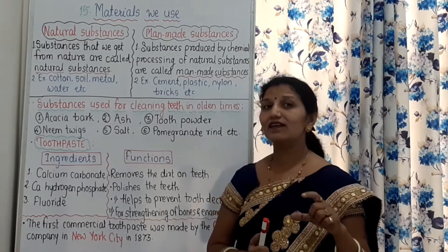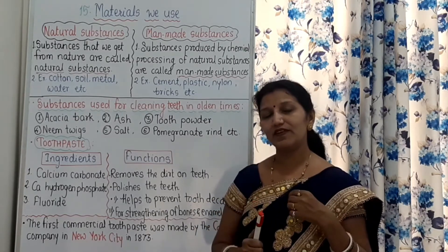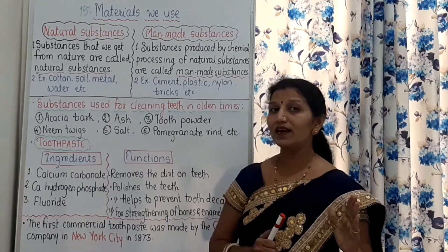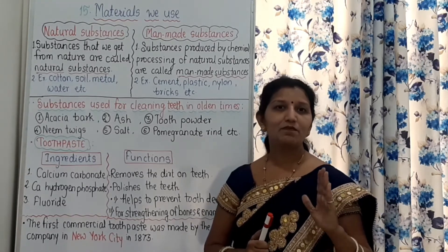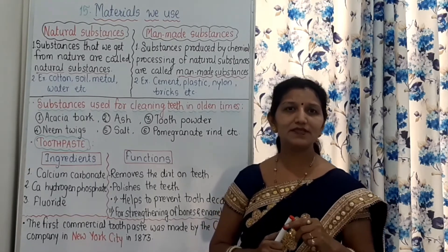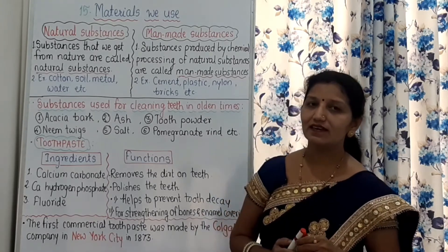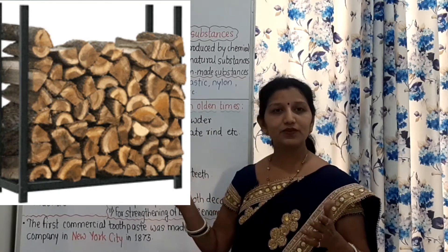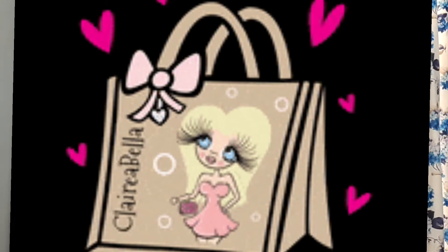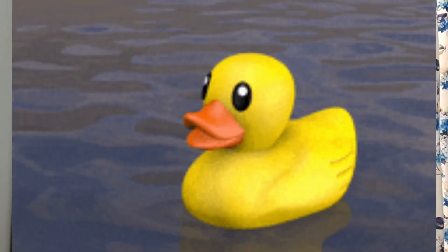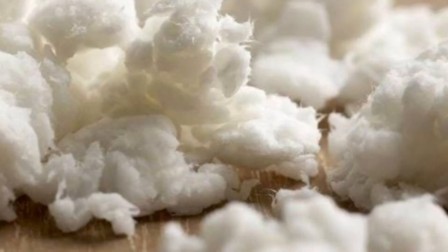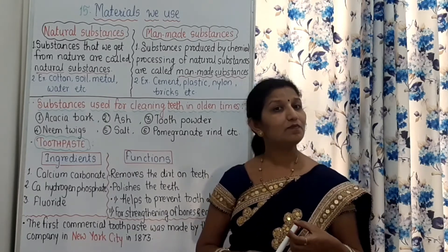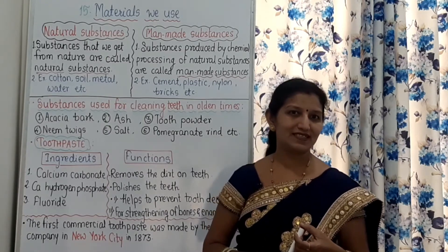Biotic are the substances that we get from living things like plants and animals. Plant-origin substances are cotton, wood, jute, rubber, and pulp. These are the substances obtained from plants.